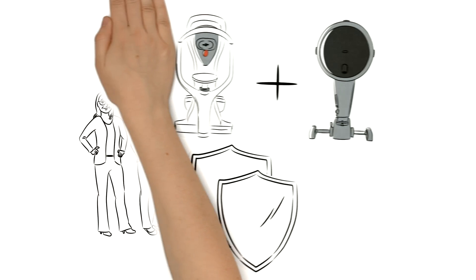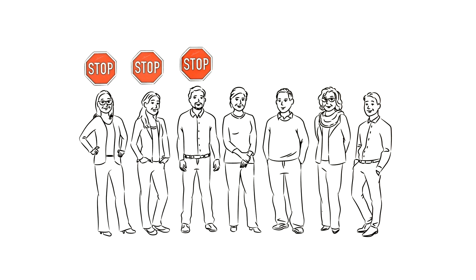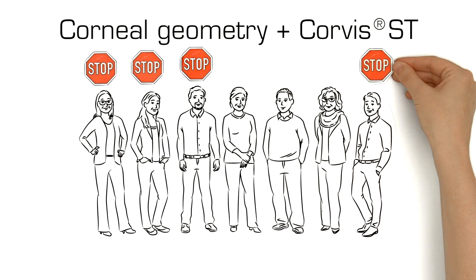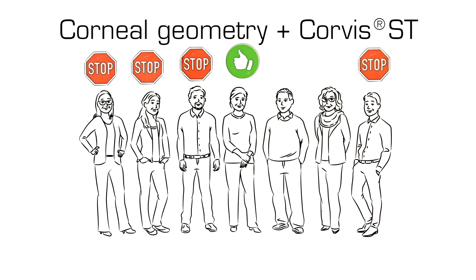Patients at risk with a predisposition for ectasia that can't be detected by corneal geometry measurement alone can be detected by means of corneal stiffness measurement. At the same time, the joint analysis helps in determining if any patient can be operated on safely. On the basis of tomography, some of them would have to be refused surgery due to reasons of safety.